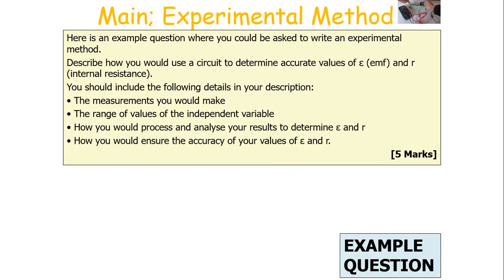Here's an example question which could be asked in AQA A-level physics paper 3. The question could be: 'Describe how you would use a circuit to determine accurate values of the EMF and the internal resistance.' You should include the following details in your description: the measurements you would make, the range of values of the independent variable, how you would process and analyse your results to determine EMF and internal resistance, and how you would ensure the accuracy of the values. This is worth five marks in an examination.